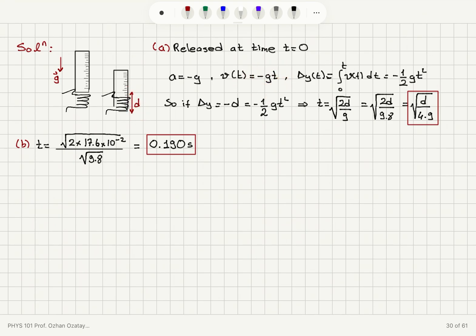The distance it falls d gives us the displacement of minus d. We have the reaction time square root 2d over g, and by substituting 17.6 times 10 to minus 2 meters for d, we obtain for our reaction time 0.190 seconds.